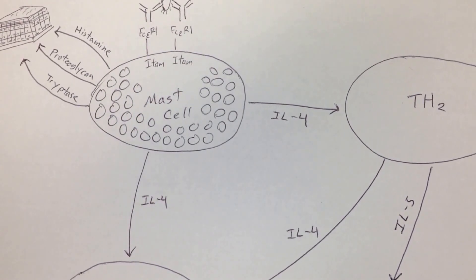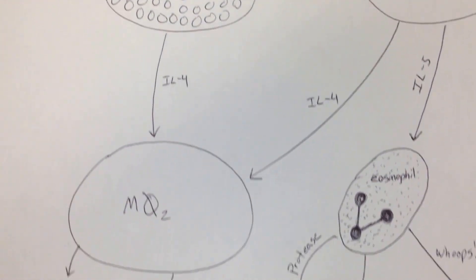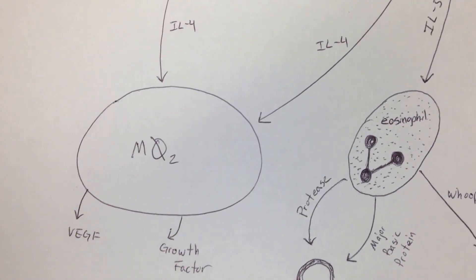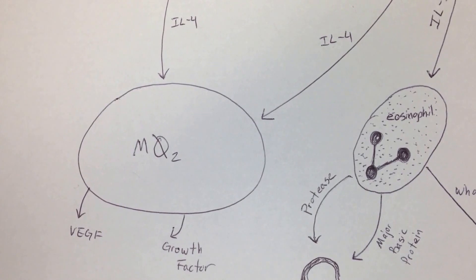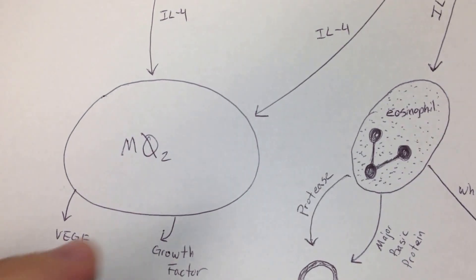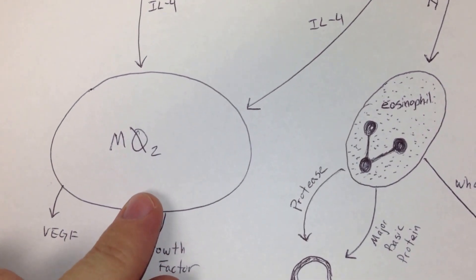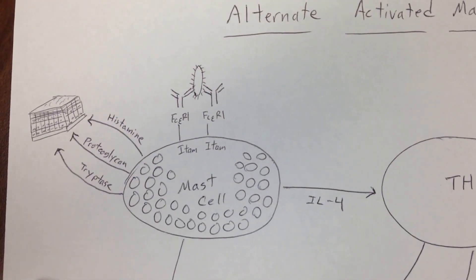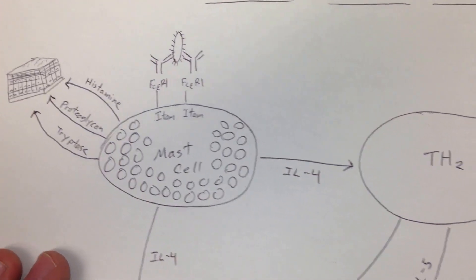You can see there's a lot of IL-4 on this page. The first place it goes, or one of the places, is down here to this macrophage, and it will tell the undifferentiated monocyte to become a macrophage type 2.